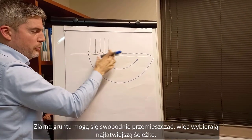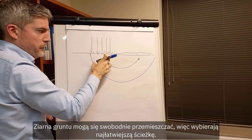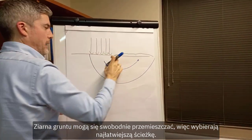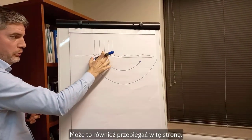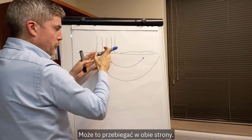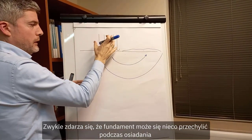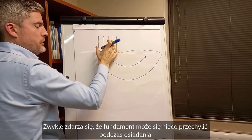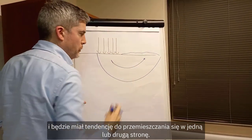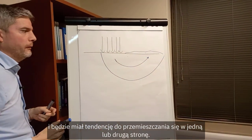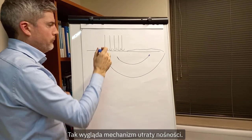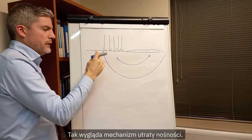These soil particles are free to escape, so they take the most efficient path out — it could go this way, or the other way, or both ways. What tends to happen is the foundation may tilt a bit during failure and it will tend to go one way or the other.